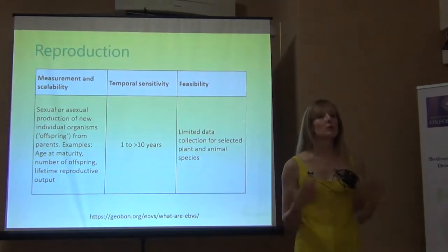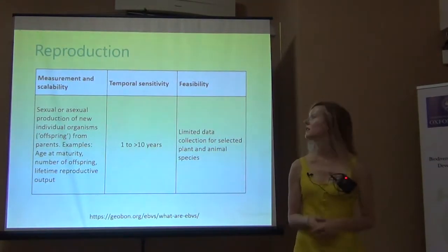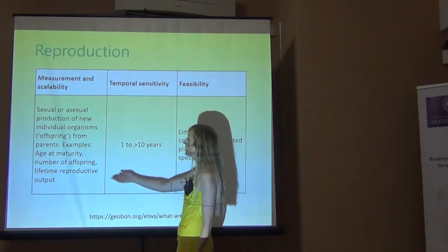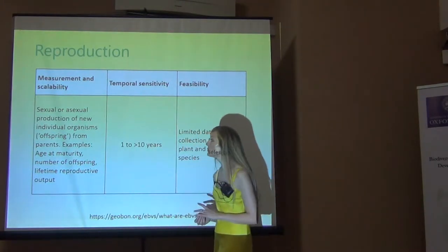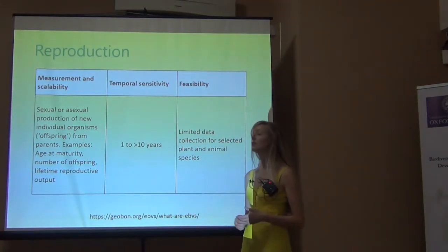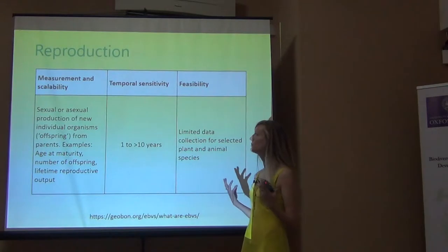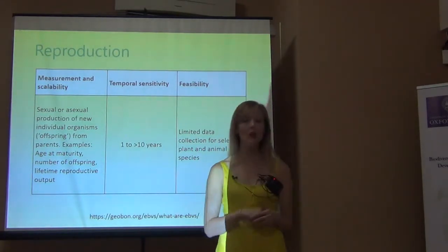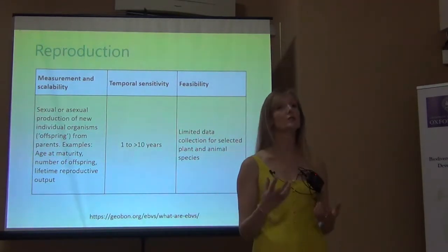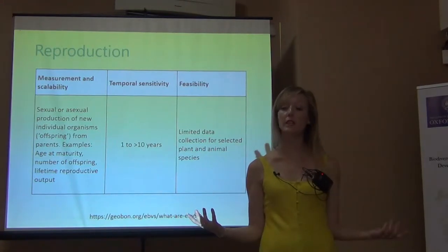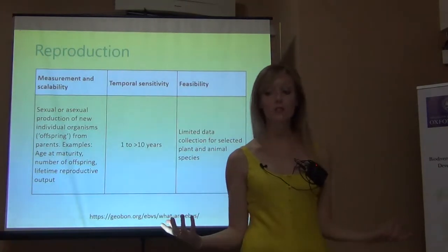So reproduction — we've already discussed this — but examples include age at maturity, number of offspring, and lifetime reproductive output.